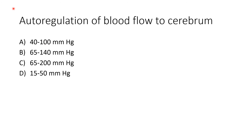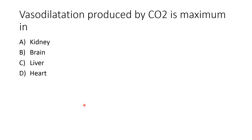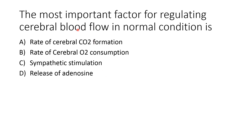MCQ review: Autoregulation of blood flow to the cerebrum is from 65 to 140 mmHg. Vasodilation produced by carbon dioxide is maximum in the brain. The most important factor for regulating cerebral blood flow in normal conditions is the rate of cerebral carbon dioxide formation — increased CO2 formation increases blood flow up to a pCO2 of 80 mmHg, at which point maximum vasodilation and maximum blood flow increase is achieved.